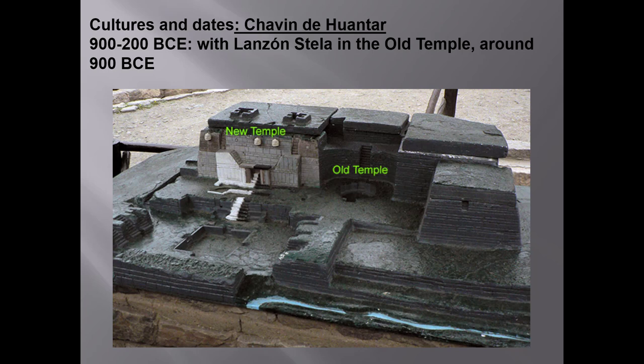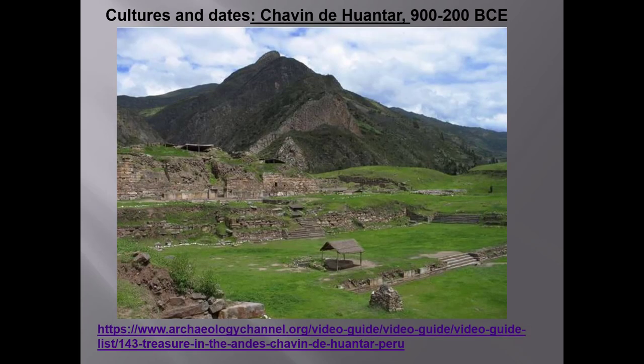Chavín de Huántar is one of the only two BCE cultures that we cover in this unit. The other is the Olmecs, and we really only look at them in the context of the Aztecs. The Old Temple dates from around 900 BCE, which makes it later than New Kingdom Egypt but earlier than Archaic Greek culture. What was the function or purpose of this complex? Why was this particular geographical location probably chosen? There's a very helpful short video about Chavín de Huántar on the Archaeology Channel, and I put the link up on Moodle because I think it's a particularly confusing culture.